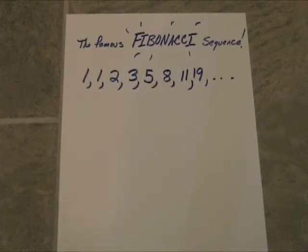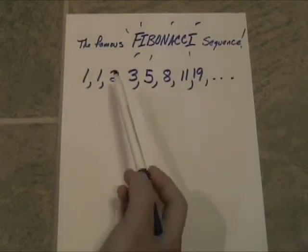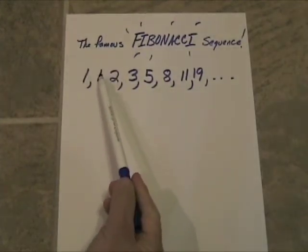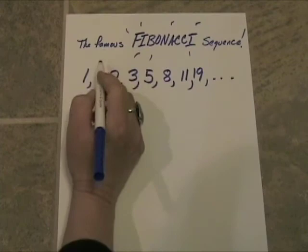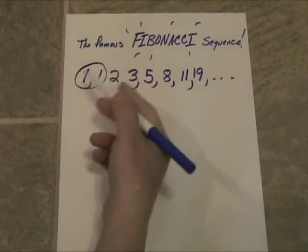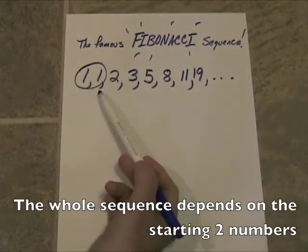This is like an ultra-recursive sequence. Because each term depends not on the one term that came just directly prior to it, but on the two terms that came prior to it. For example, you have a 1 here and you have a 1 here. These are your starting points. The whole sequence depends upon these two numbers.